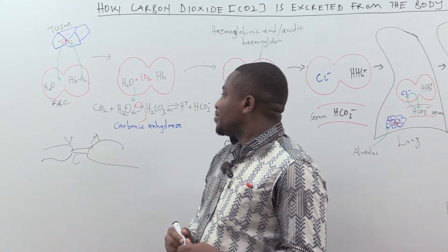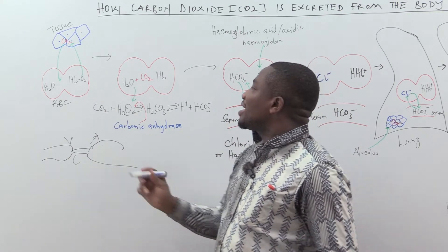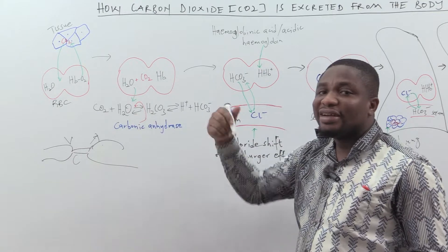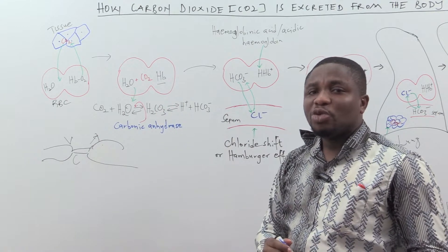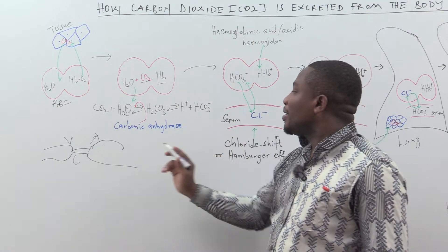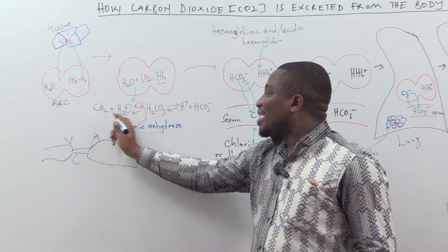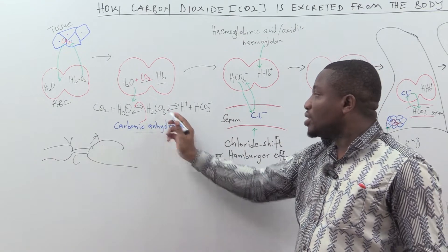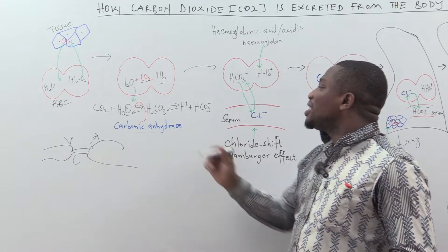When carbon dioxide diffuses into the red blood cell, it meets water contained in the red blood cell, which also contains hemoglobin. The water reacts with the carbon dioxide, catalyzed by the enzyme carbonic anhydrase. This reaction produces the weak carbonic acid H₂CO₃, which is very weak and dissociates immediately.